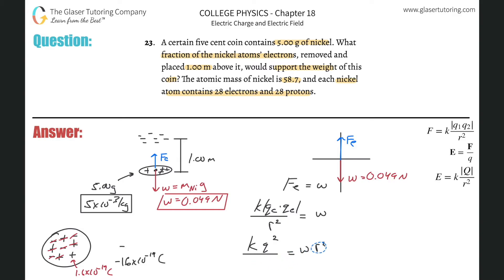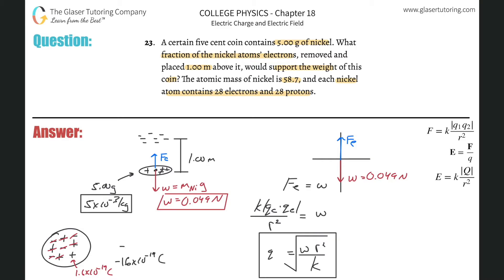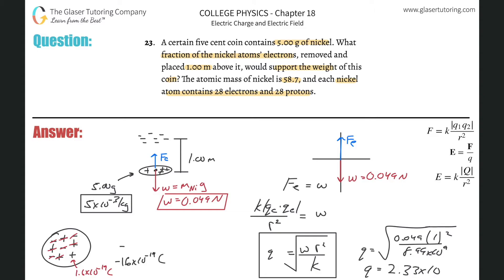So we solve K times Q squared over R squared equals W for Q. Rearranging: Q equals the square root of W times R squared divided by K. Plugging in: square root of 0.049 times 1 squared divided by 8.99 times 10 to the ninth. We get a value of about 2.33 times 10 to the minus 6 Coulombs.